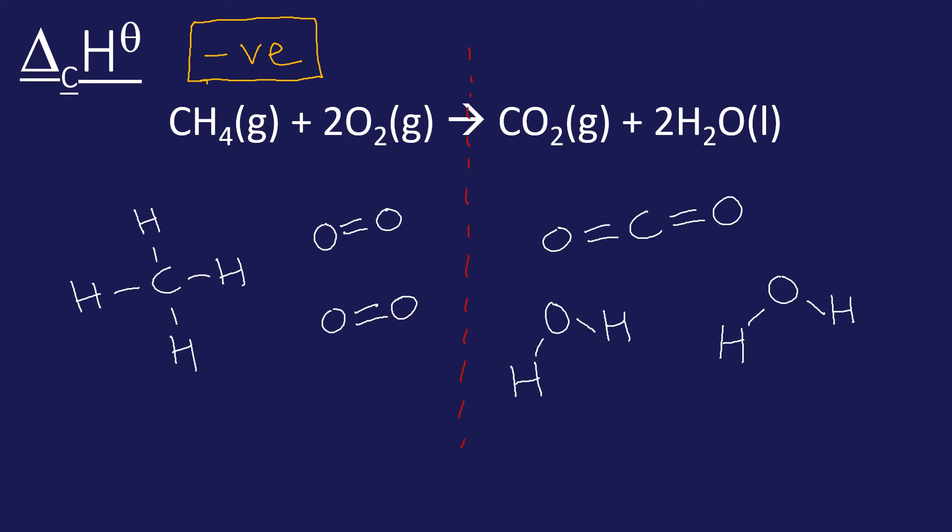Now what we can visualize here is we can actually look at the left-hand side and say, well, we've got to break that bond, break that bond, break that bond, and break. We've got to break all of those four bonds—we've got to break four carbon-hydrogen bonds and two double bond oxygens. That's going to require energy, so the first process, bond breaking, is endothermic. That's going to require energy.